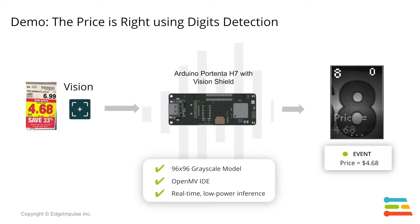The Arduino Portenta H7 employs a dual-core Cortex-M architecture where the computer vision model can run on the more capable Cortex-M7 core, while the Cortex-M4 core could be used to handle sensor fusion and provide the necessary triggers to activate the computer vision model when needed.